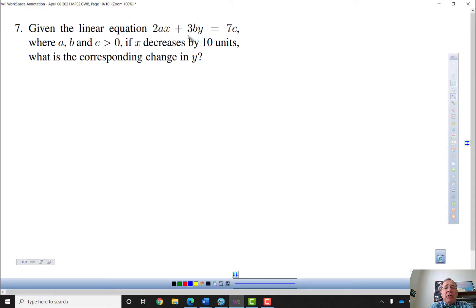Well, this is a linear equation, so I'm going to put it in slope-intercept form. So the first thing I'm going to do is subtract the X term from both sides. So 3BY equals negative 2AX plus 7C.